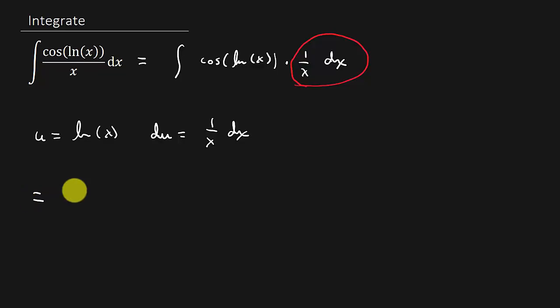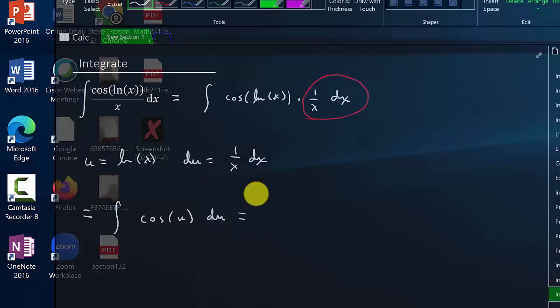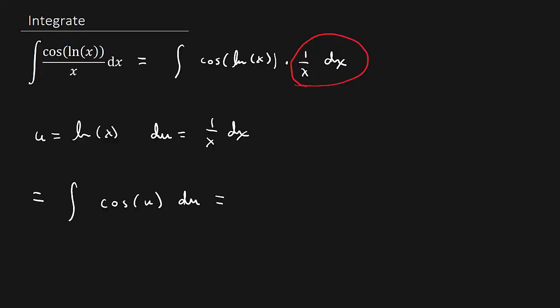And so now we can make our substitution. So natural log x we're going to replace with u. So that's going to be cosine u. And then the 1 over x dx we're going to replace that with du. And now we can integrate.